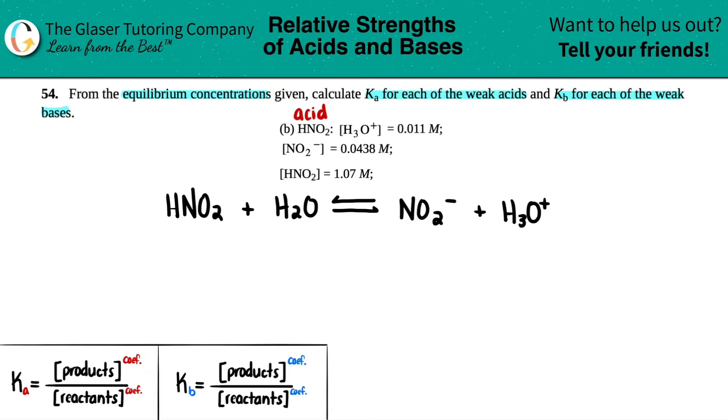And now let's write down what our equilibrium concentrations are. H3O plus was 0.011 molarity. Nitrite was 0.0438 molarity. And then the nitric acid was 1.07 molarity. Now you might be saying, what about the water? Well, remember water is the solvent. It's a liquid. And any K value, whether it's KA or KB, no liquids are allowed. No solids are allowed and no liquids. So this goes bye-bye. But we have to put this here so that we can make it a balanced equation. But for our equation, we don't care about it.